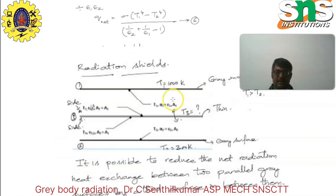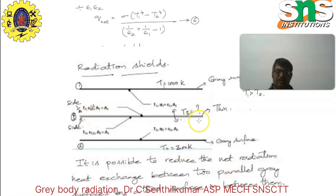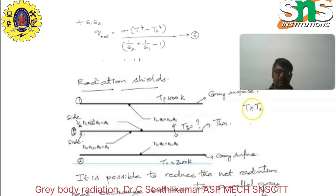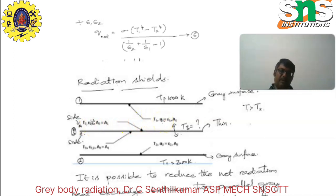The radiation shield has T1 equal to 1000 Kelvin, and T2 equals 300 Kelvin. These two are grey body surfaces, and the third one is a thin layer. T1 is greater than T2, as already seen in the grey body surface. You can see the formula: T3, alpha equal to emissivity and A — same as the equations for all grey body surfaces.